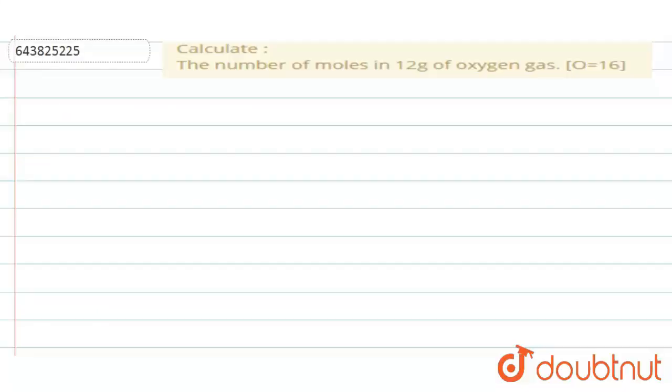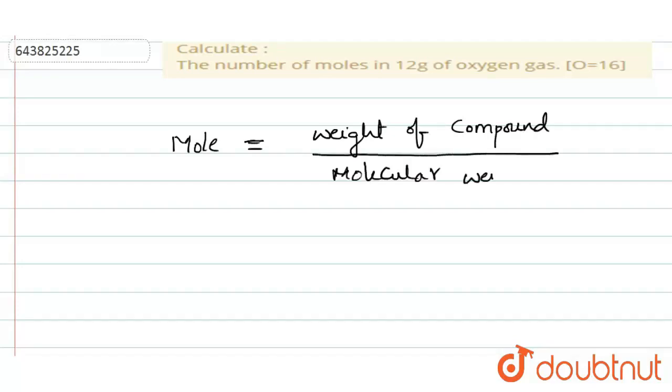Here, calculate the number of moles in 12 grams of oxygen gas. For number of moles calculation, we have the formula: mole equals weight of compound or substance by molecular weight. Simply, number of moles n equals weight by molecular weight.